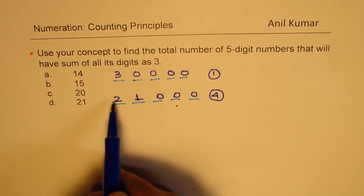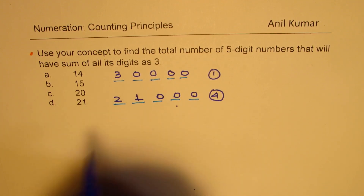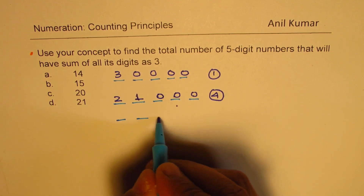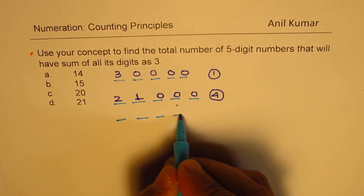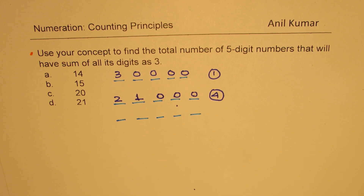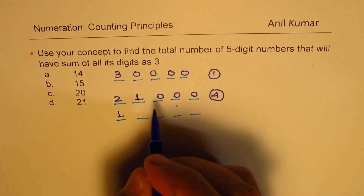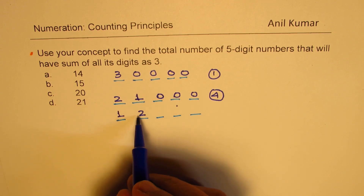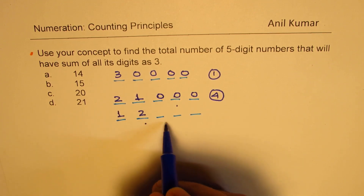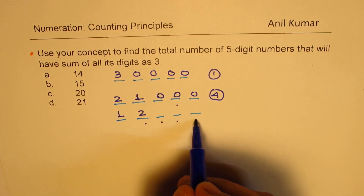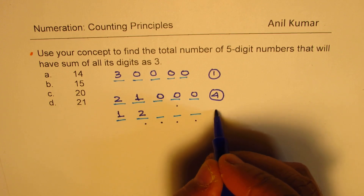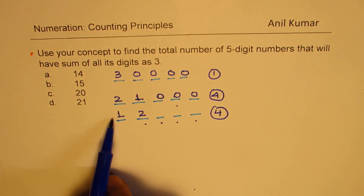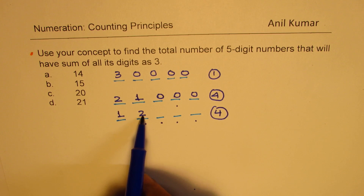Now, flipping one and two — we could also begin with one and then use two as our second number. So if I begin with one and place two, we could place it in the second, third, or fourth position — four positions in total. So we get four different ways in which we could have one followed by two.